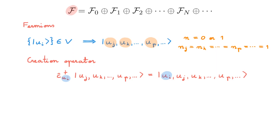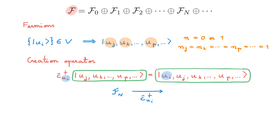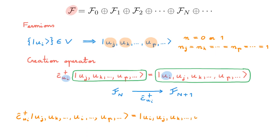Another way to understand what the creation operator is doing is that it allows us to navigate the Fock space. If we start with a Fock state with n particles, it lives in F_n. c†_ui adds a particle to the system in state ui, allowing us to generate a new Fock state with n+1 particles which lives in F_{n+1}. If we act with the creation operator on a state in which ui is already occupied, we get a Fock state with ui twice, which vanishes — this is the Pauli exclusion principle.